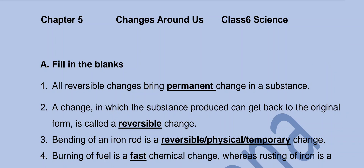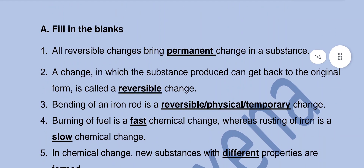Fill in the blanks. All reversible changes bring permanent change in a substance. A change in which the substance produced can get back to the original form is called a reversible change. Bending of an iron rod is a reversible, physical, temporary change — all three options are correct.